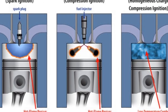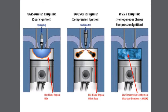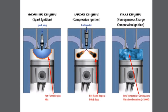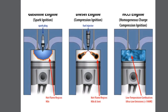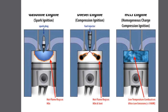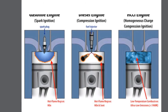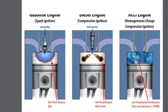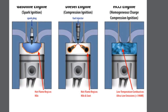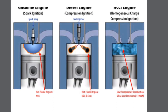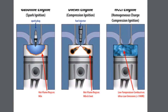In a CAI engine, we are not using a spark plug. The fuel used is gasoline, and the combustion is an auto-ignition combustion with a number of flame fronts. The auto-ignition happens in a more controlled manner, which helps provide a controlled atmosphere of combustion — hence the name Controlled Auto Ignition.